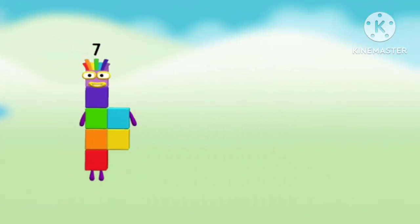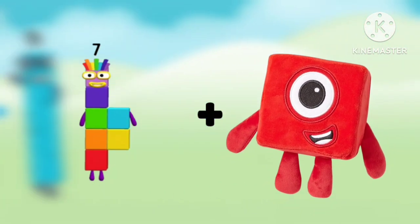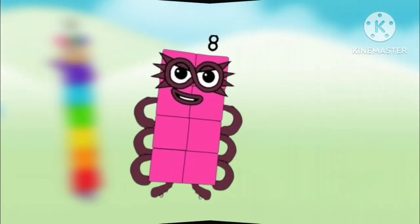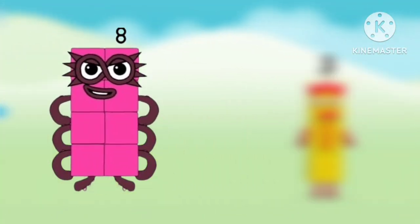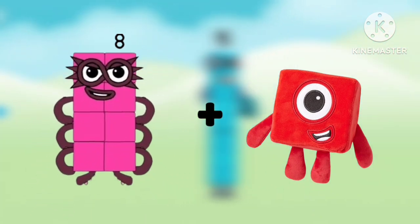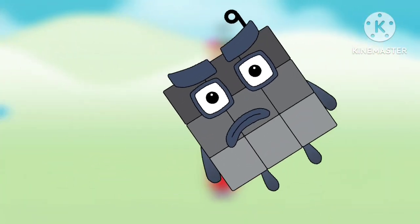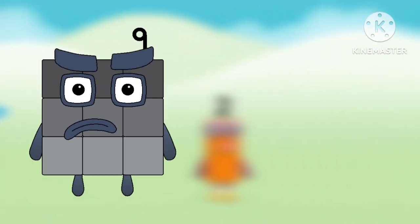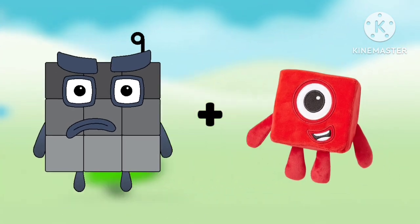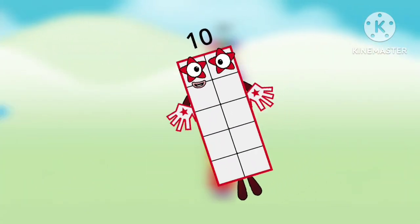Number blocks 7 plus number blocks 1 equals number blocks 8. Number blocks 8 plus number blocks 1 equals number blocks 9. Number blocks 9 plus number blocks 1 equals number blocks 10.